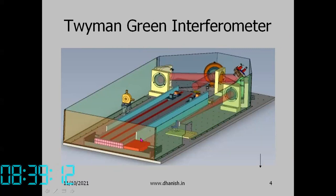We have two gauge blocks: one is a reference gauge block and one is an unknown gauge block. We compare the two lengths using this Twyman-Green interferometer.